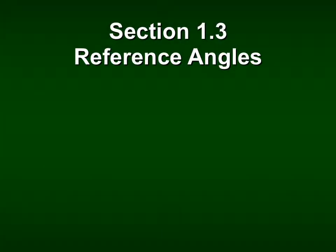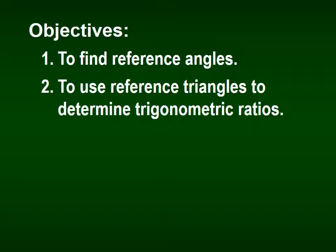We're going to go over Section 1.3 in our BJU Pre-Calculus Textbook. This lesson is over reference angles. Our objective today is to find reference angles, and once we find them, we're going to use them to determine our trig ratios.